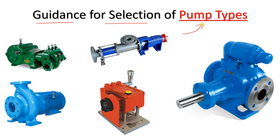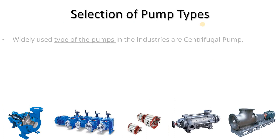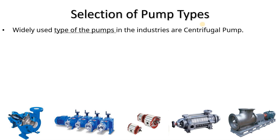We will start our video from the guidance for selection of pump types, and in upcoming videos we will deep dive into the selection process. If you work in industry, you will have seen that most of the pumps we use are centrifugal type. Centrifugal pumps are widely used in our industry. There are some advantages to using centrifugal pumps over others — with respect to maintenance, operation, and cost, they are very effective.